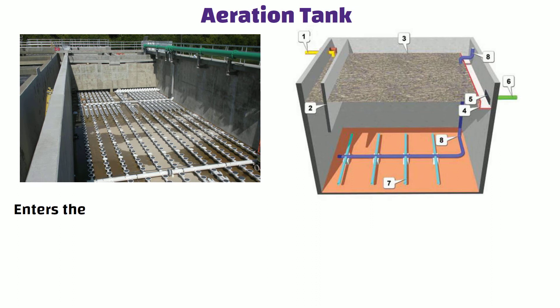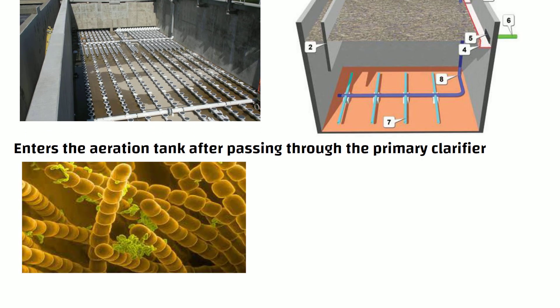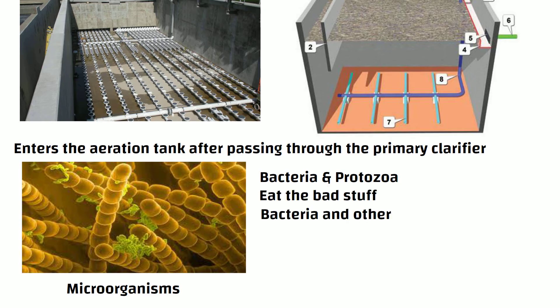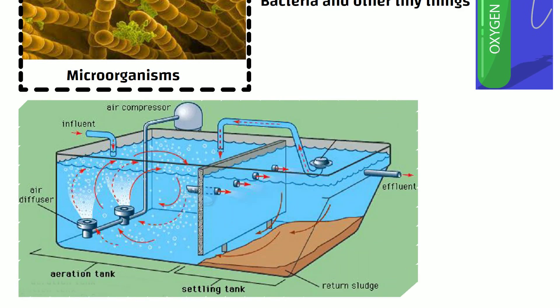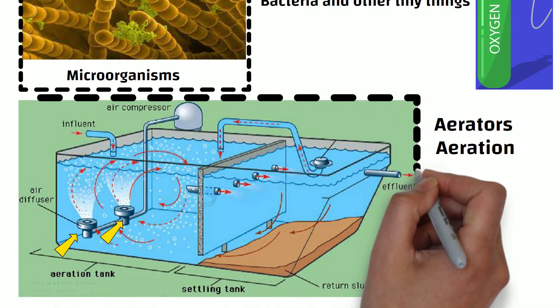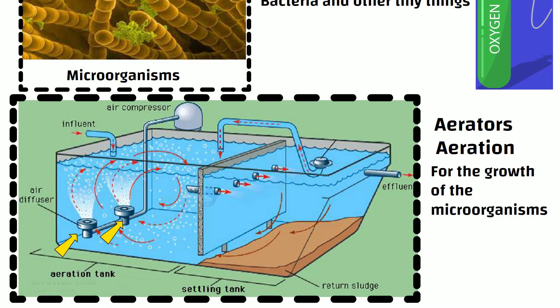Aeration Tank: the waste water enters the aeration tank after passing through the primary clarifier. The aeration process begins with the introduction of microorganisms such as bacteria and protozoa into the waste water. These microorganisms break down organic matter and other harmful substances in the water. In order for these microorganisms to survive, they need oxygen, which is added by blowing air into the water using machines called aerators — this process is called aeration. The process is carefully monitored for parameters such as dissolved oxygen, pH and temperature.